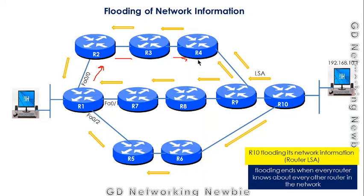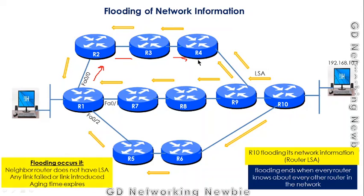Flooding ends when every router knows about every other router in the network. Flooding may occur when a neighbor router doesn't have an LSA, when a link fails, or when a new link is introduced in the network. For example, if a new router is added and configured with OSPF, all routers need to exchange LSAs with each other to update their information.